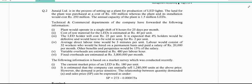Okay, welcome to part 3 of the series of videos for BFD and MAC derivatives portion. Let us start the exam question. The exam question says Junaid Limited is in the process of setting up a plant for production of LED lights. The land for the plant was purchased at a cost of 100 million. Whereas the plant and its installation would cost 250 million. Therefore the total cost capitalized in PPE is 350,000. The annual capacity of the plant is 1.5 million LEDs.